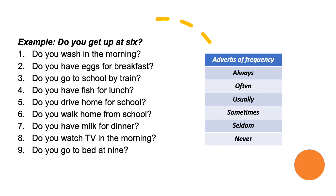Number six: Do you walk home from school? Number seven: Do you have milk for dinner? Number eight: Do you watch TV in the morning? Number nine: Do you go to bed at nine?